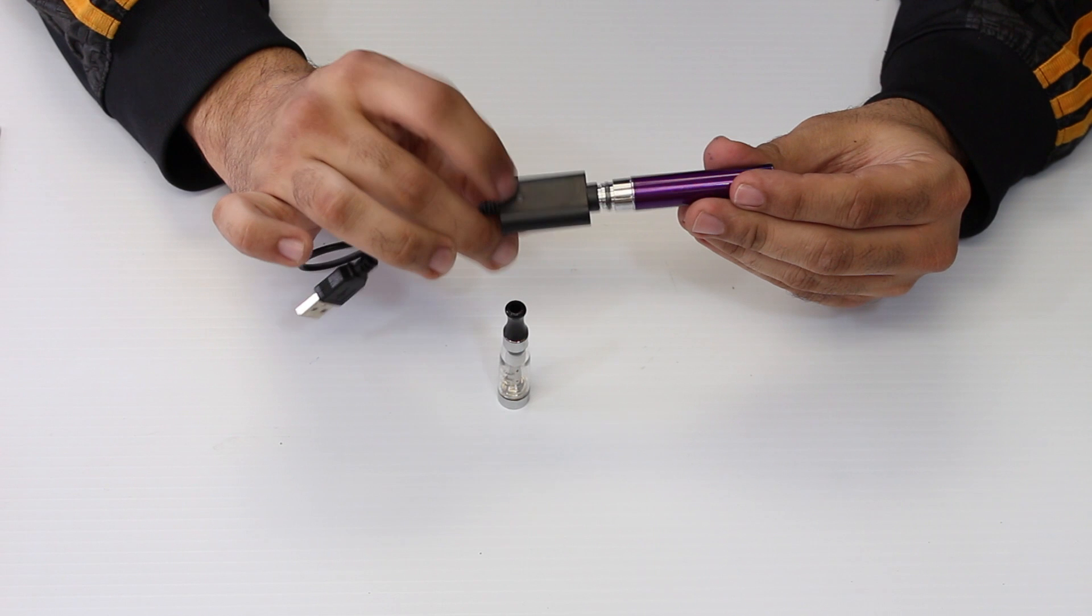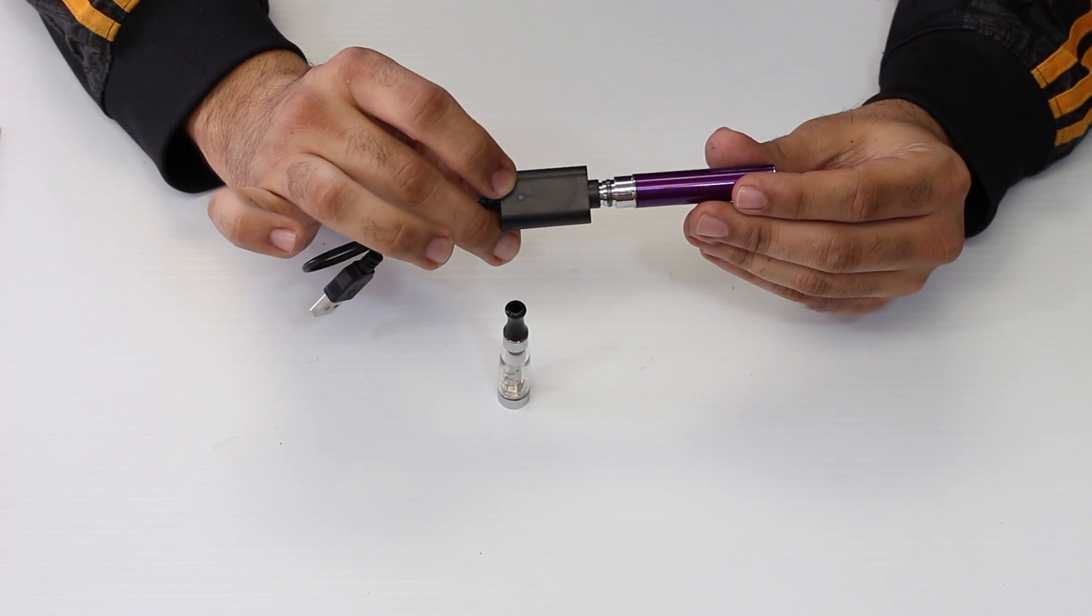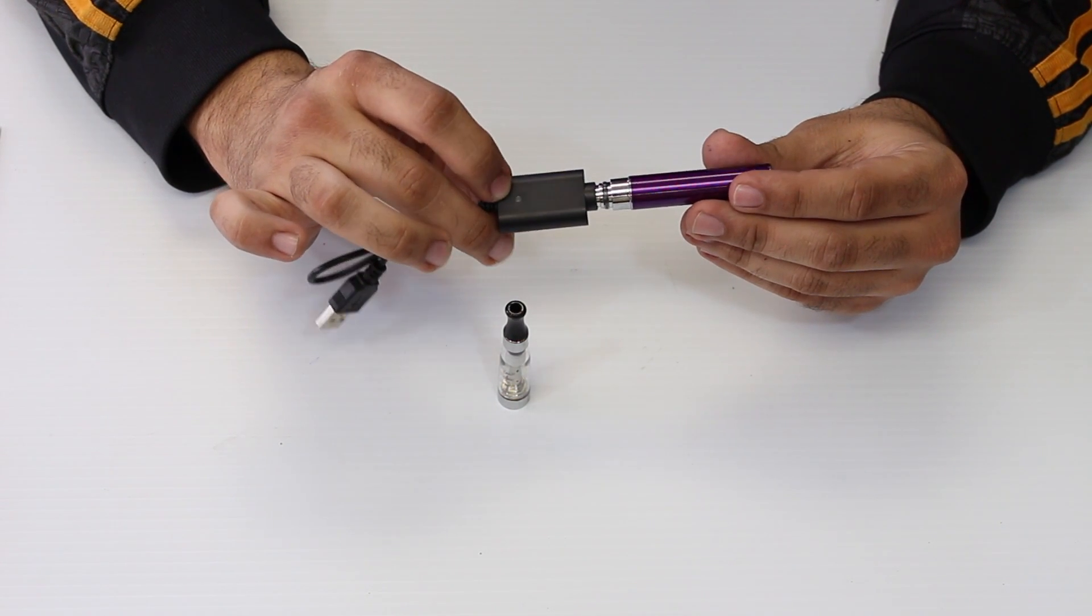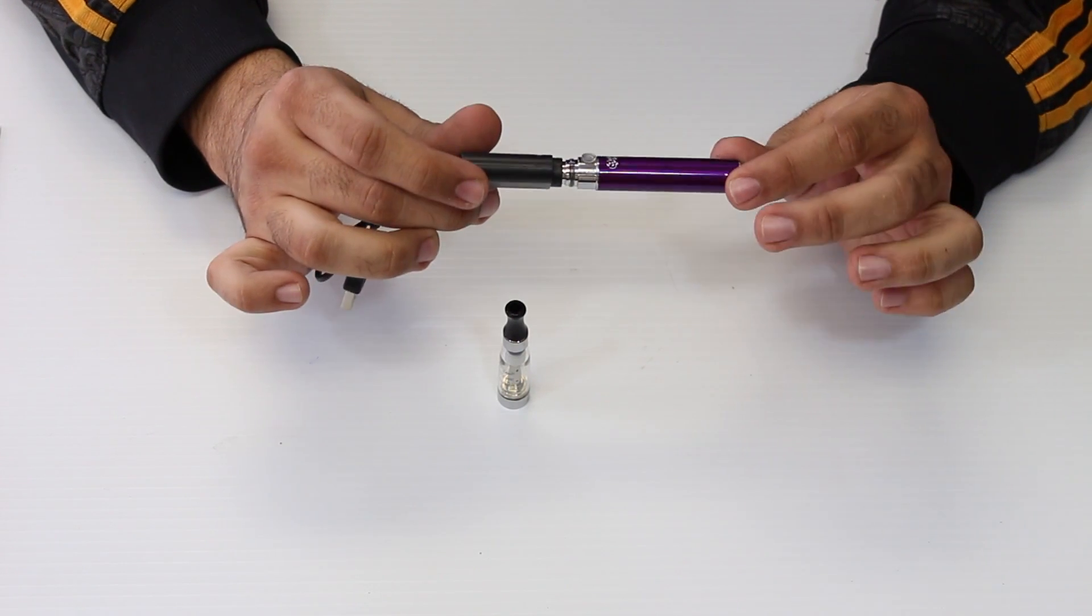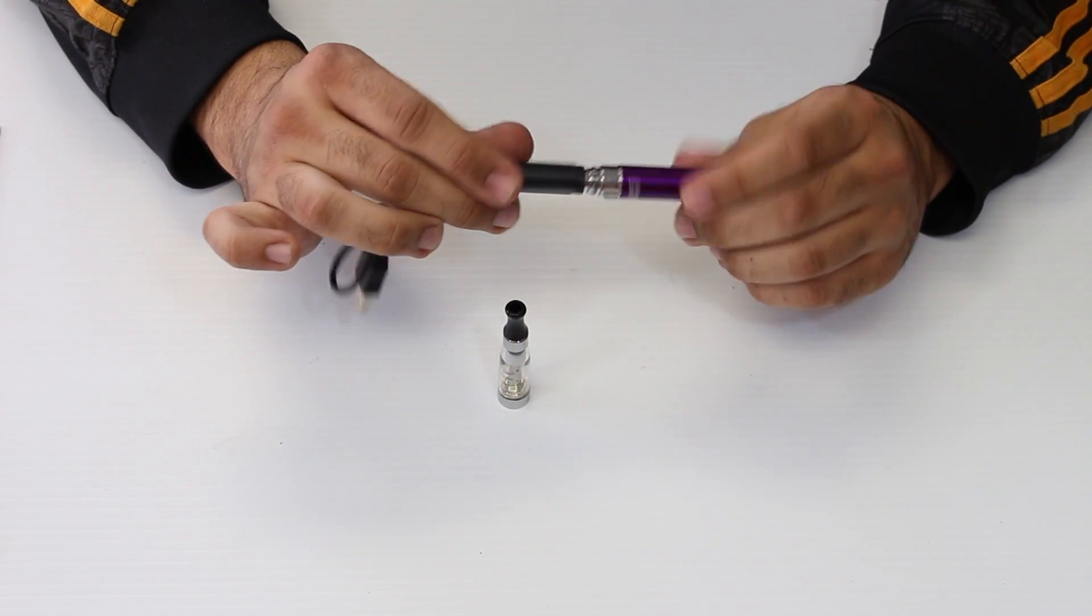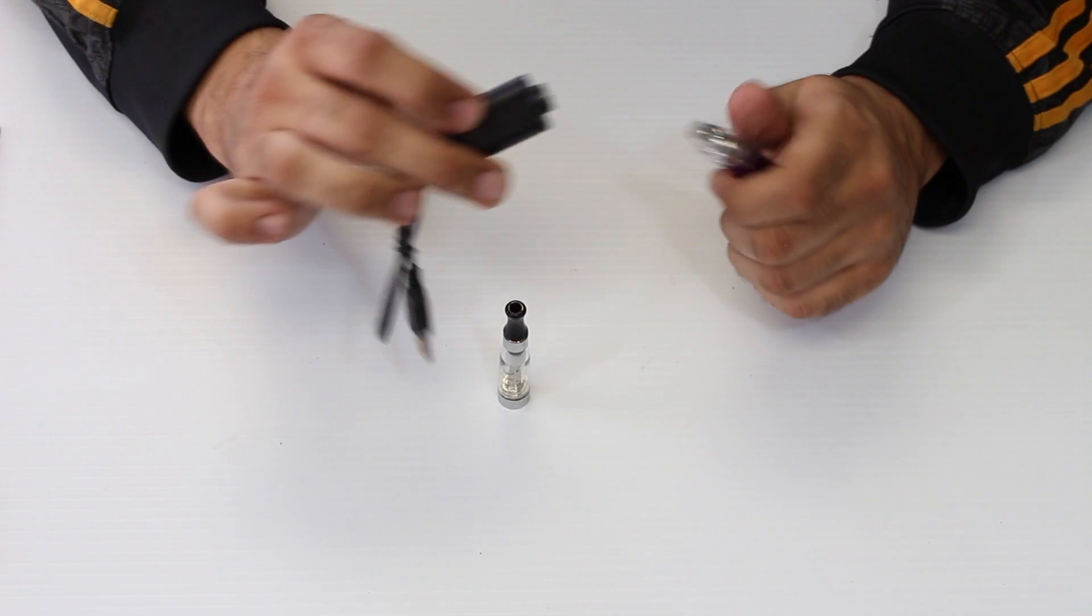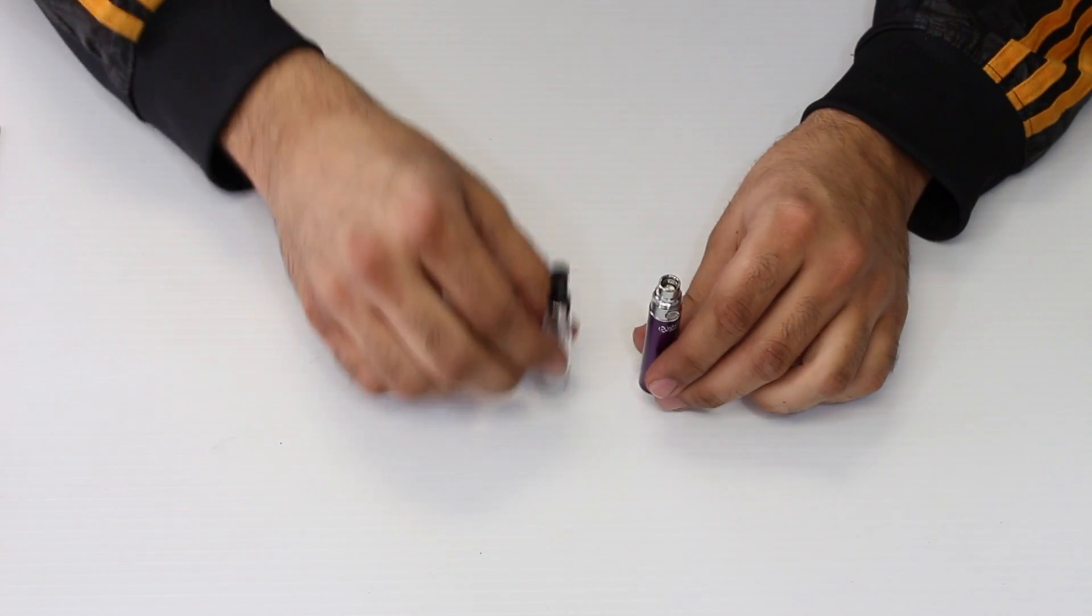Now when charging, the light will turn red on the USB charger. When it's fully charged, that light will turn green, letting you know the battery is charged. Please make sure not to overcharge your battery - leave it on for the time recommended.